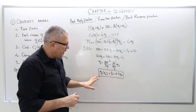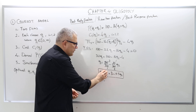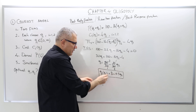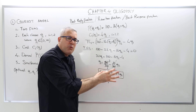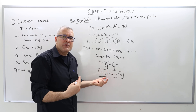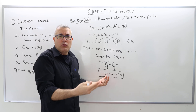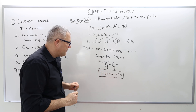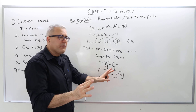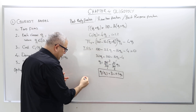By the way, the parenthesis notation q1(q2) just means my function — which is 3 minus 0.5q2 — is named q1 and depends on the parameter q2. You can always ignore the parenthesis and simply write q1 equals 3 minus 0.5q2.